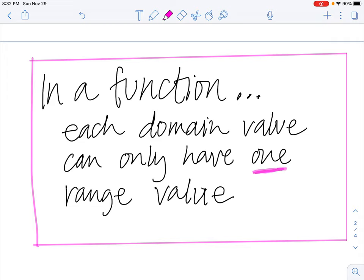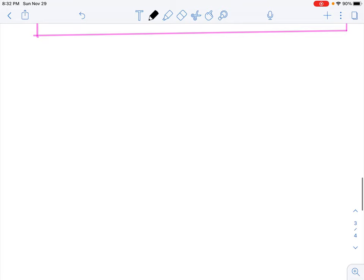Think about the example that I started with about your height and your age. If your age is the input and your height is the output, there's only one height for each age that you were. At the age of 10, you were a certain height. You weren't three different heights, you were a certain height. At the age of 12, you were a certain height. At your current age, you are a certain height. You're not five different height values.